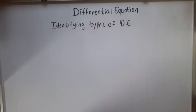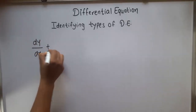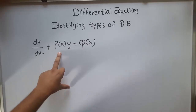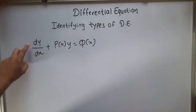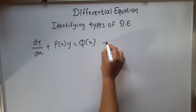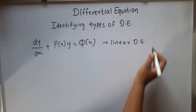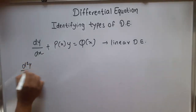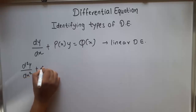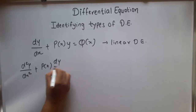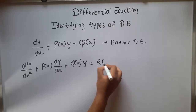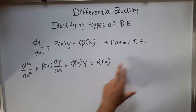So it is important to know which type of differential equation it is. If we have dy/dx plus p(x)y equal to q(x), where p is only a function of x and q is only a function of x, and we have dy/dx and y, this is called a linear differential equation. The second order form is d²y/dx² plus p(x) dy/dx plus q(x)y equal to r(x), which is also called a linear differential equation.